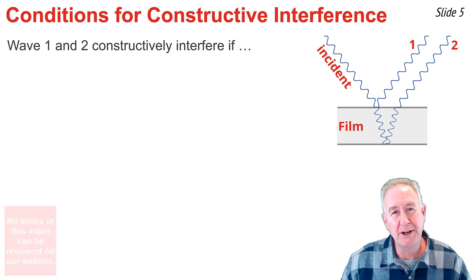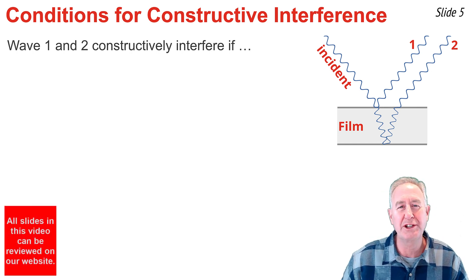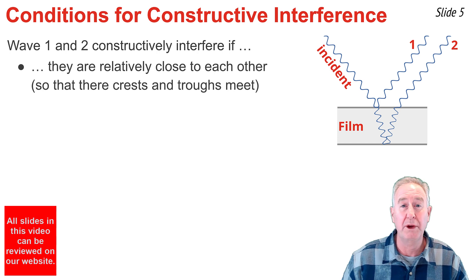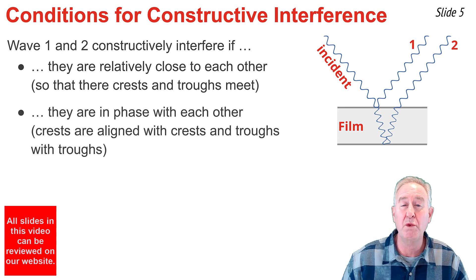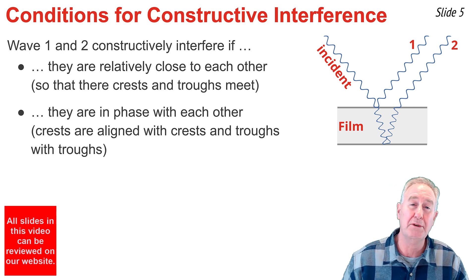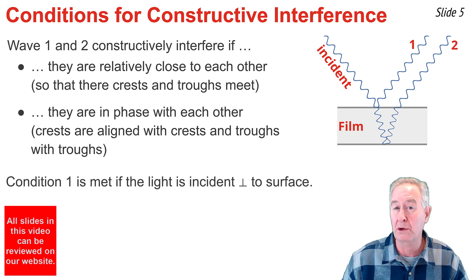Waves 1 and 2 will constructively interfere as long as two conditions are met. The first is that wave 1 and wave 2 must be relatively close to one another, so that their crests and their troughs are meeting up with each other. The second condition is that wave 1 and wave 2 must be in phase. By saying that, I mean that the crests of wave 1 are aligned with the crests of wave 2, and the troughs of wave 1 are aligned with the troughs of wave 2. Condition 1 is met as long as the light that is approaching the top surface of the film is approaching perpendicular to the film's surface.